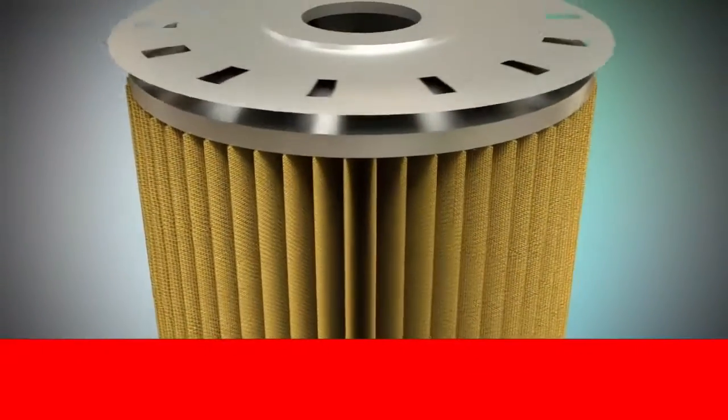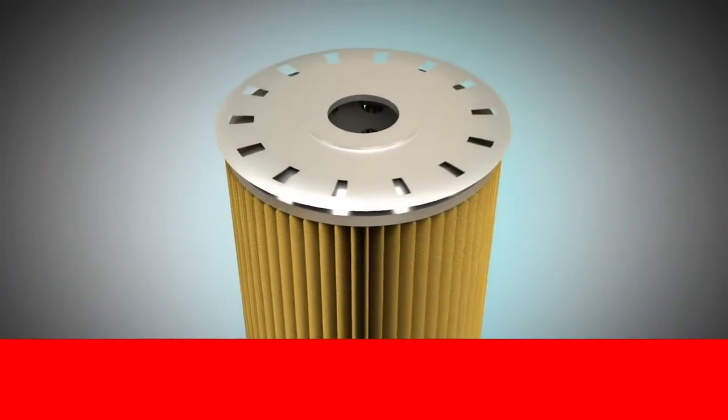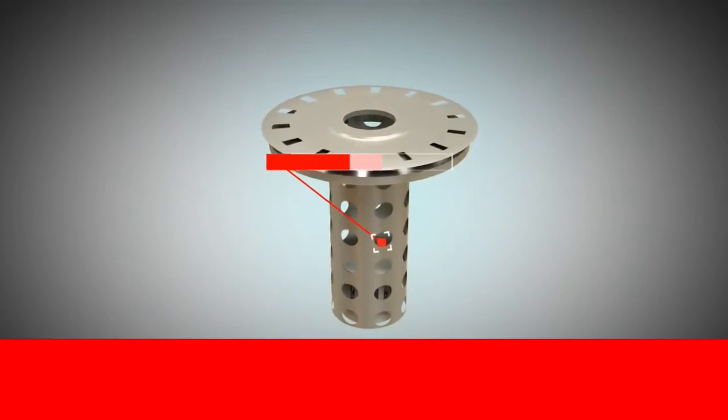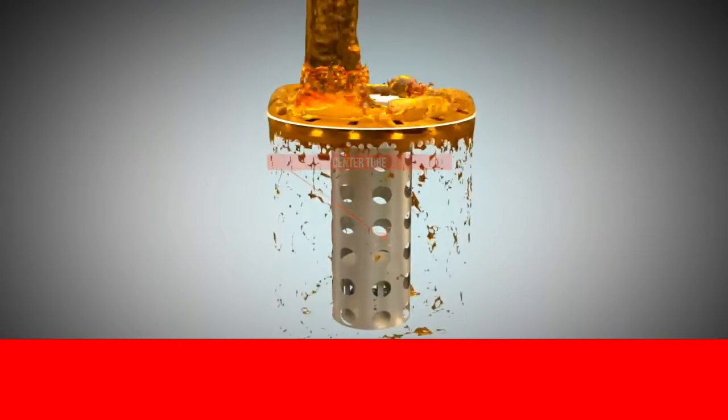The oil flows from the outside into the oil filter, then runs through the filter, which is made invisible here, and flows through the center tube. Then, the oil flows upwards.